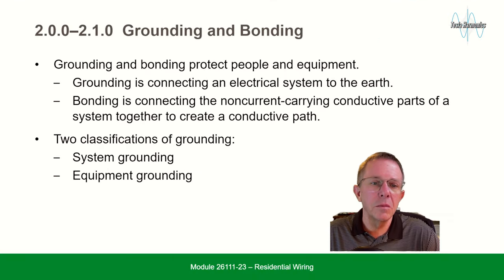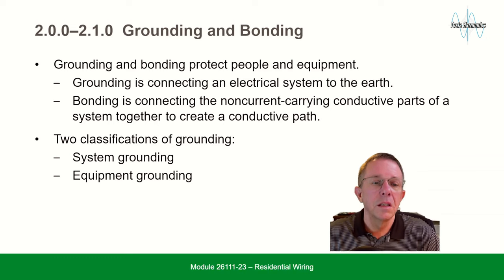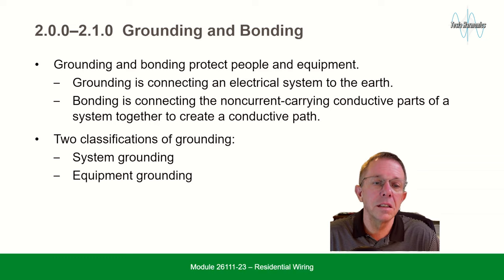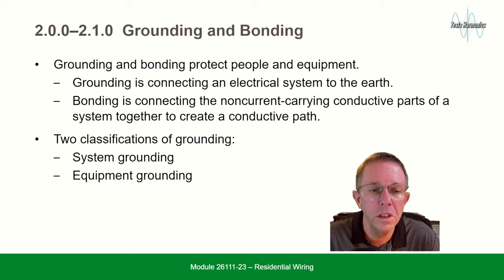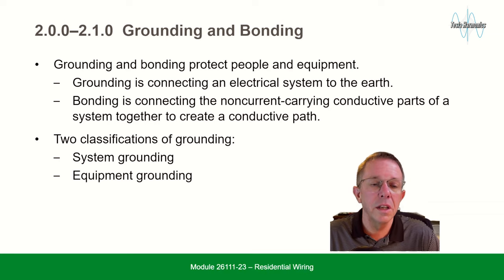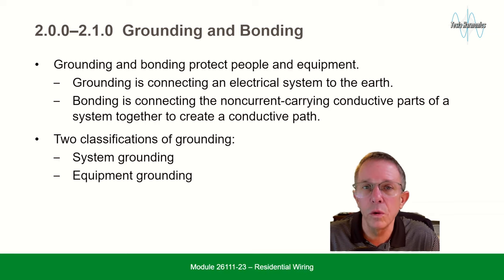Grounding and bonding protect people and equipment. Grounding is connecting an electrical system to the earth. Bonding is connecting the non-current-carrying conductive parts of a system together to create a conductive path. There are two classifications of grounding: system grounding and equipment grounding.